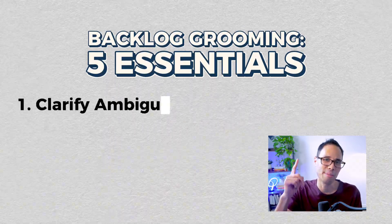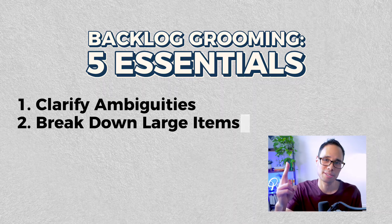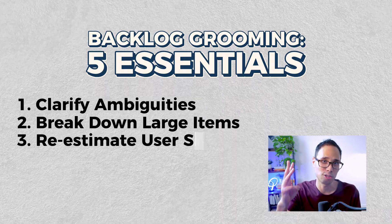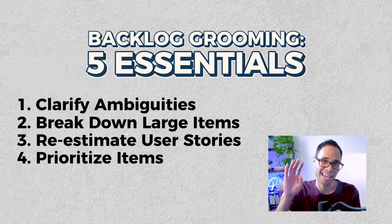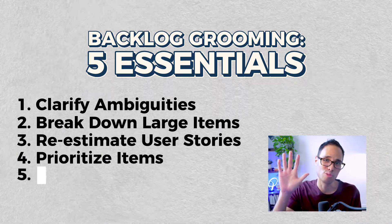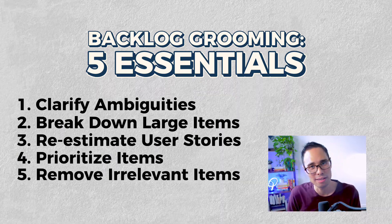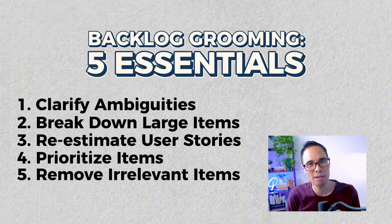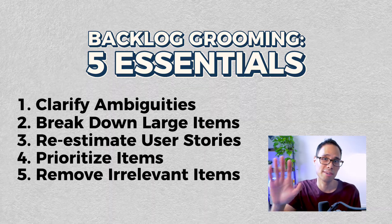First, clarify ambiguities. Second, break down large items into smaller stories. Third, re-estimate any user stories. Fourth, prioritize items for the next sprint. And fifth, remove any items which are completely irrelevant based on your team's work and the feedback you're receiving from the customer. Focus on these five areas and you're going to be golden.